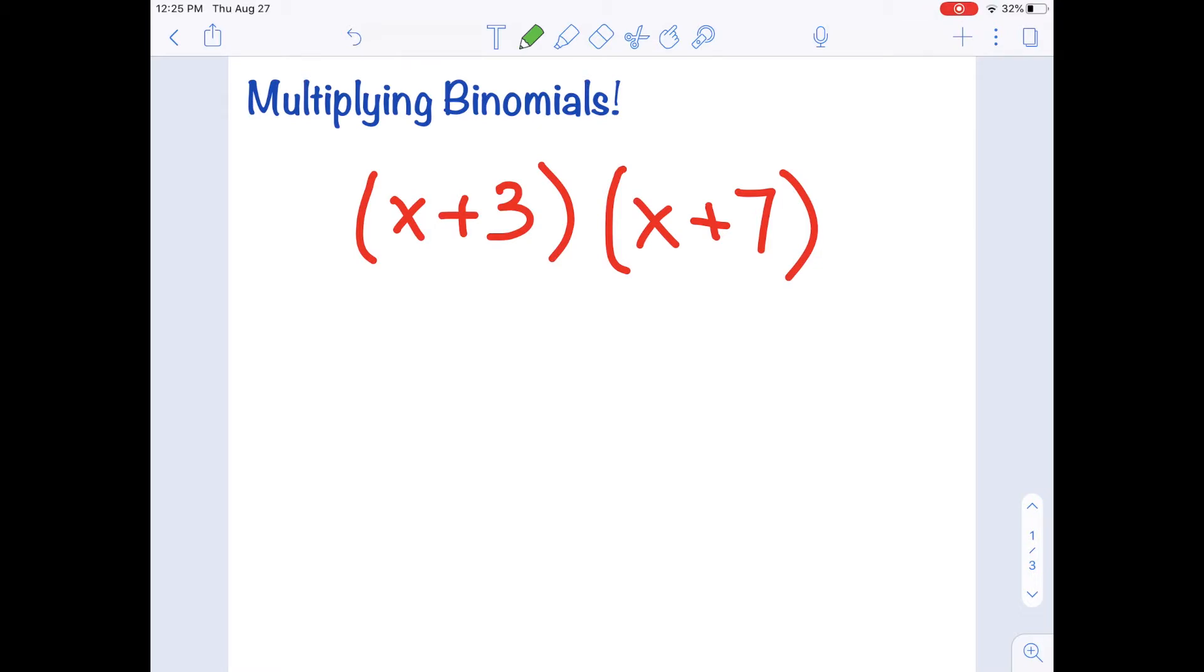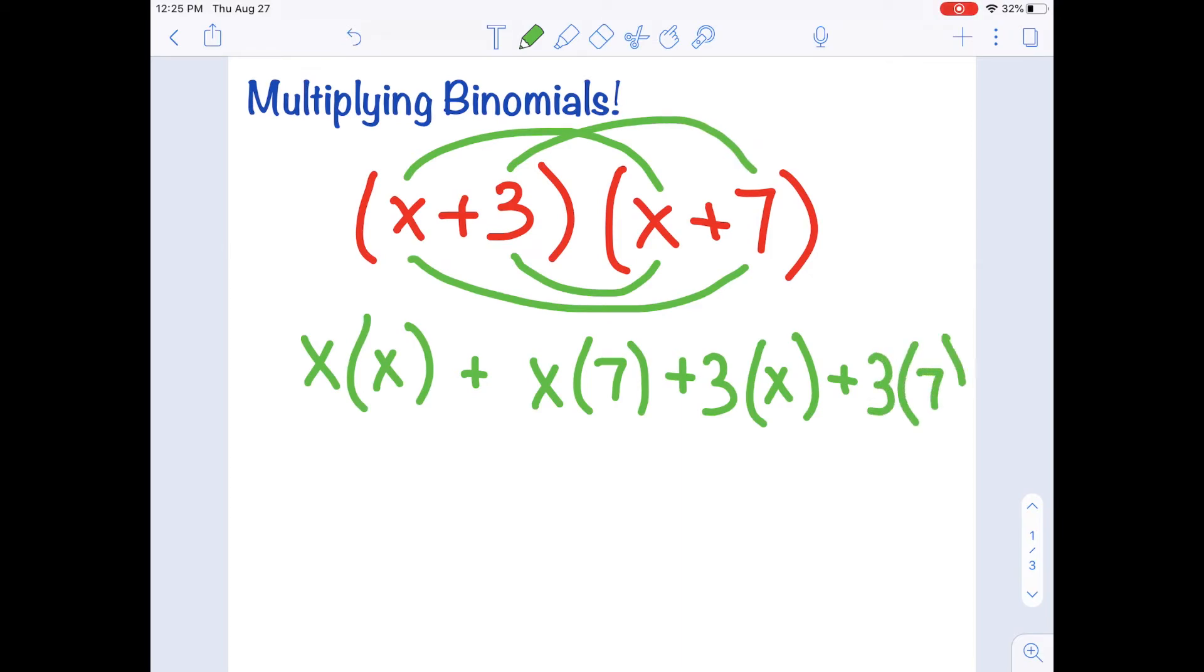The f stands for first. So we want to multiply these first two terms, which would be x times x. The o stands for outside. So we'll multiply our outside two terms, which in this case would be x times 7. The i stands for inside, which would be 3 times x. And our last terms would be 3 times 7.